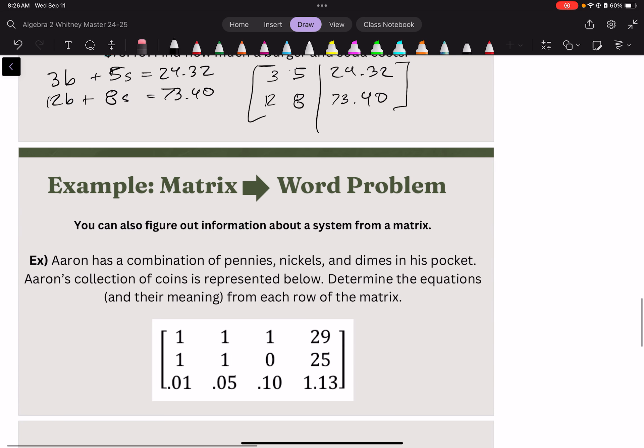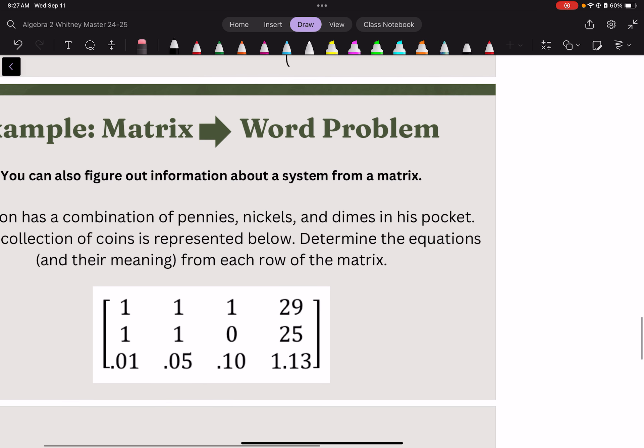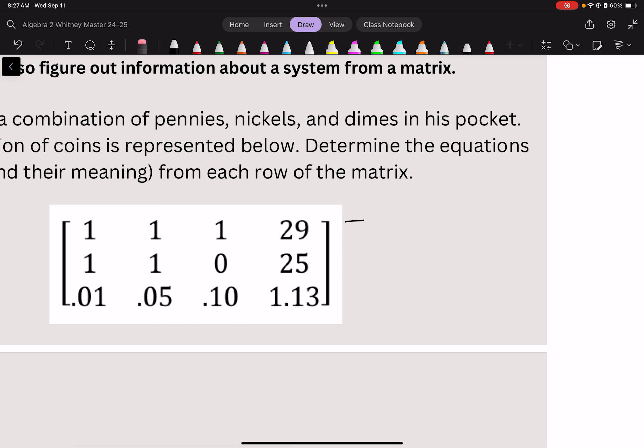We can also get information from a matrix. So, Ariana has a combination of pennies, nickels, and dimes. His collection is represented below. What do we have? Well, let's turn this into problems. The first one says, well, first off, we need to determine which columns are what.